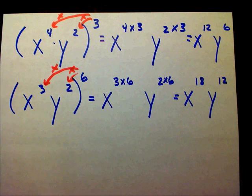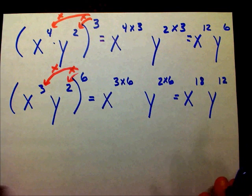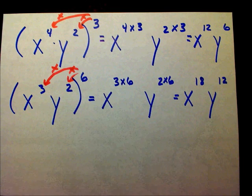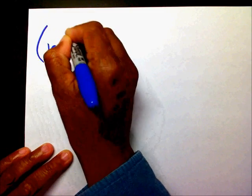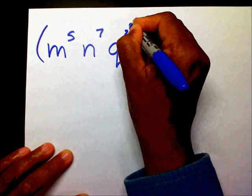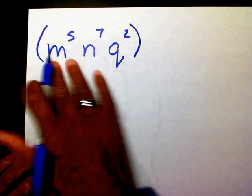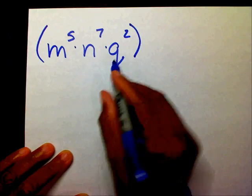Now, you can have more than 2 powers inside your parentheses. You can have 1 power, 2 powers, or you can even have 3. If I had m to the 5th, n to the 7th, and q to the 2nd — this product, I'm going to multiply these powers, this times this times this — all raised to the 3rd power.